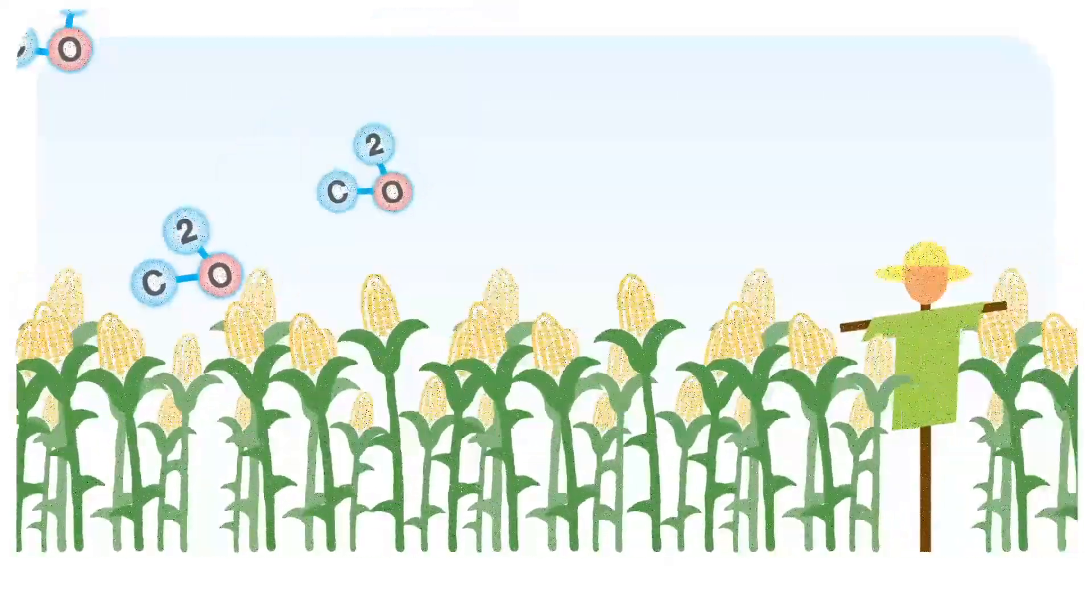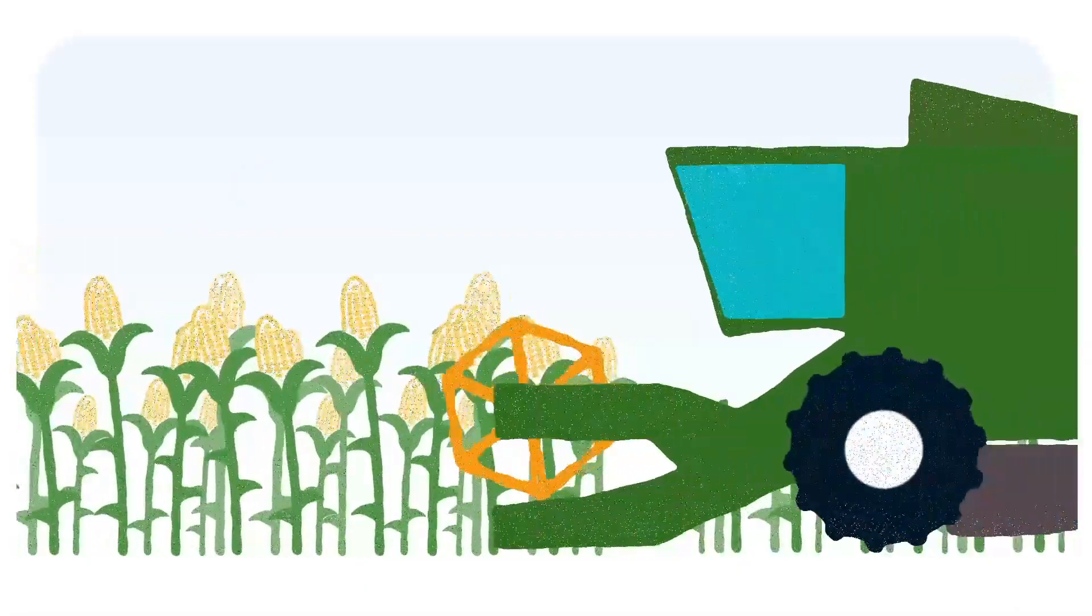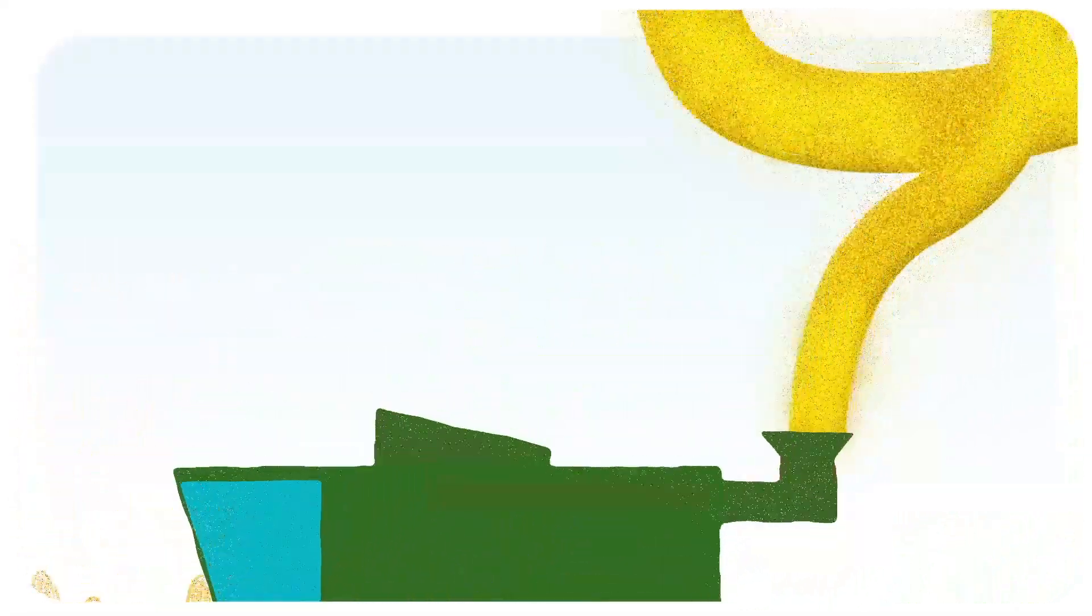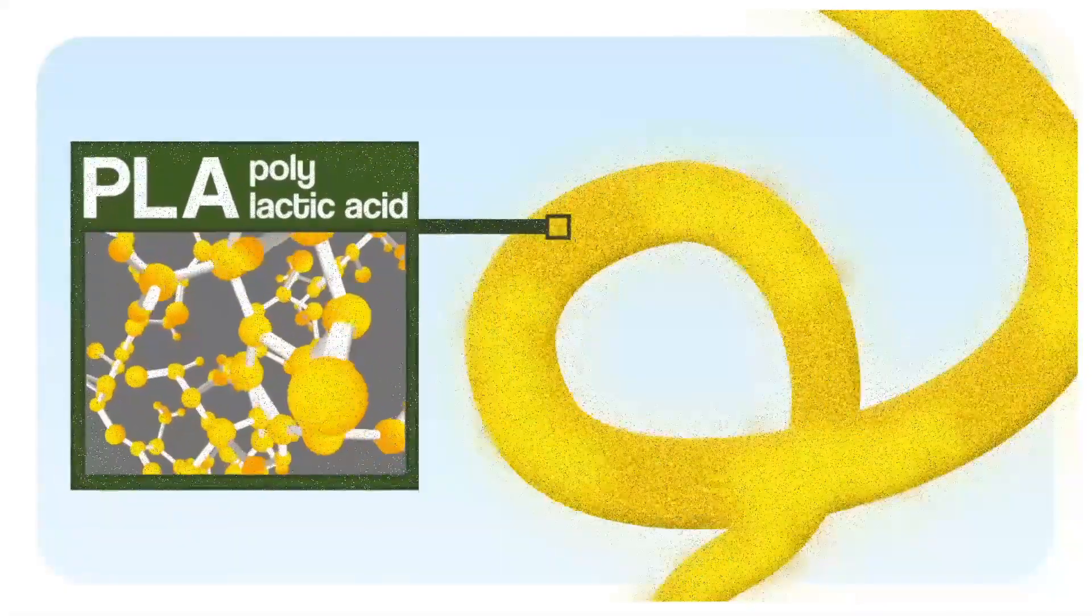Corn grows in lush fields sucking in carbon dioxide from the atmosphere. This is then harvested and processed to extract the long-chain sugar molecules, which are polymerized to create polylactic acid.